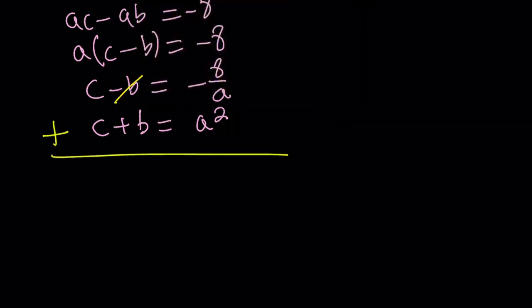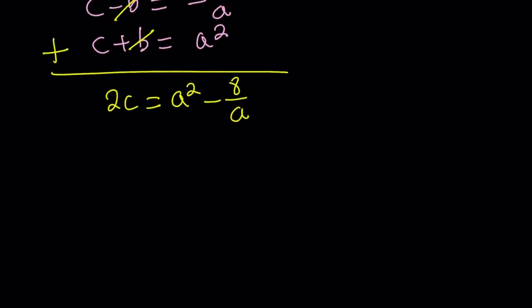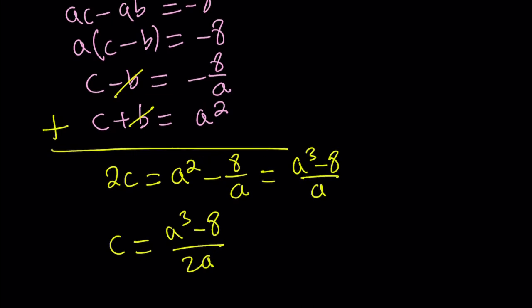Adding these up, b cancels out. We get 2c. Let's go ahead and make a common denominator. And then divide both sides by 2 or multiply by 1 half. Which gives us c equals a cubed minus 8 over 2a. So that's the value of c.